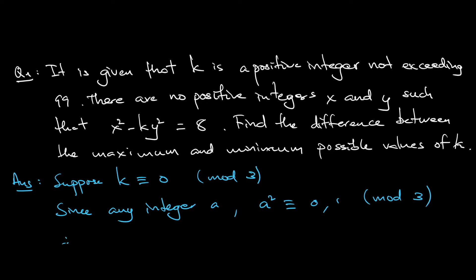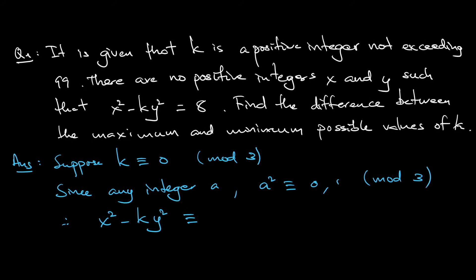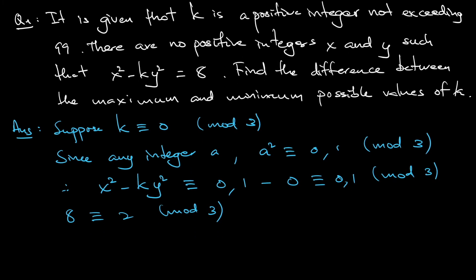So that means that x² - ky² is congruent to x², a perfect square. We said it can only end up with either 0 or 1. We are dealing with mod 3. Minus k, we already assume that it is congruent to 0. So 0 multiplied by y² will always be 0. So of course that is still congruent to 0 or 1. But notice that since 8 divided by 3, the remainder is 2, so it can never be equal.